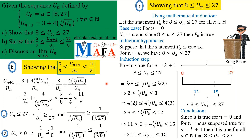Using what we proved in part (a) is actually more helpful here than mathematical induction. As an exam strategy, try not to use the same method twice — if you used mathematical induction in part (a), use a direct method in part (b), so the examiner can see the breadth of what you know.